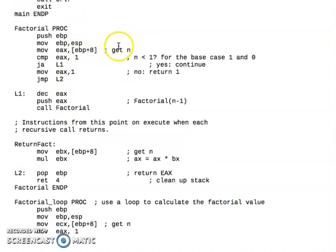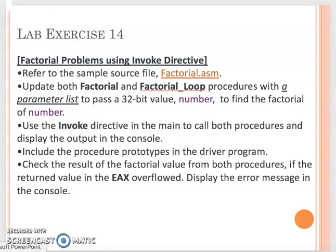Now, for both the factorial and the factorial loop procedure, you will have one parameter. That will be the n factorial, the number you want to look in for the factorial. The same thing—you will return the n factorial from the EAX. You need to make the change accordingly because now your new procedures can both use the PROC to add their parameter list.